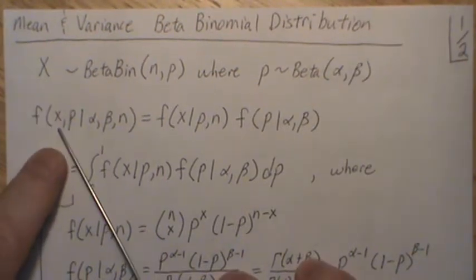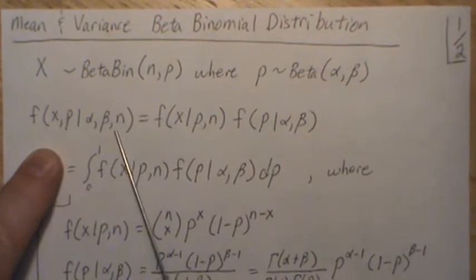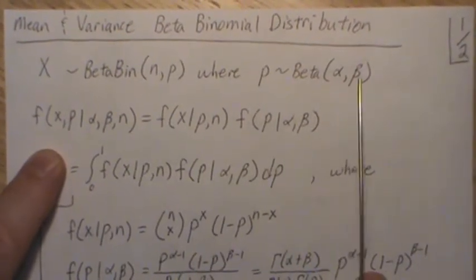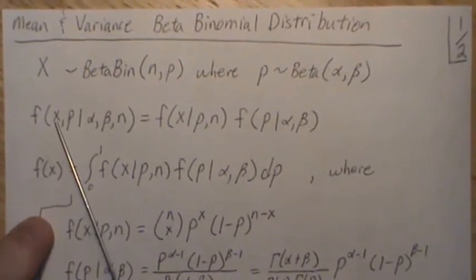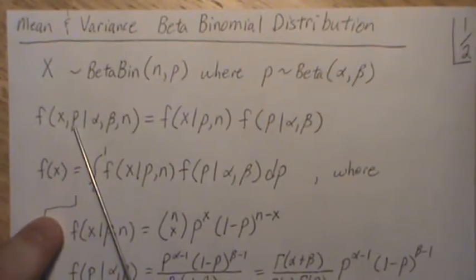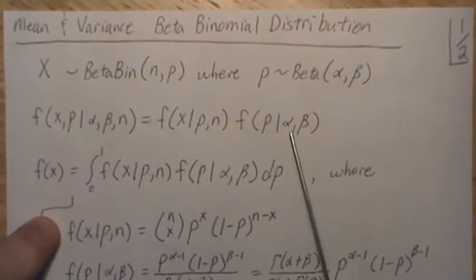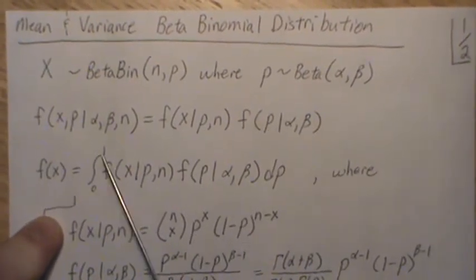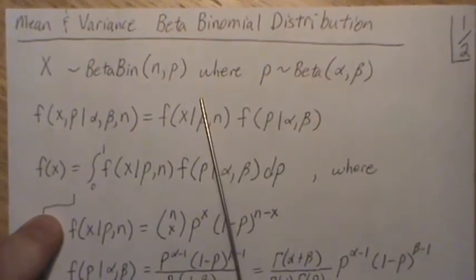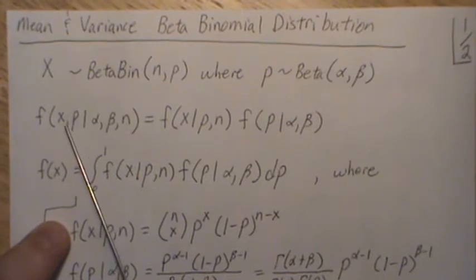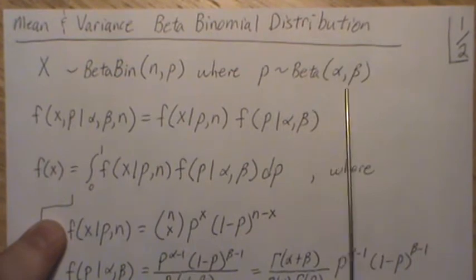If we look at the joint distribution between X and P given all the parameters, it can be rewritten so that X intersect P is written as X given P times P — given the parameters of course. This is just conditional probability. Then if we want X by itself, we have to integrate out the random variable P, which goes from 0 to 1.